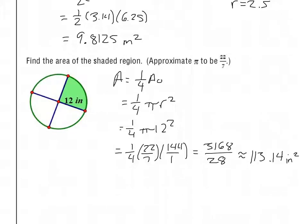Finally, the shaded area is one-fourth of a circle, so we use one-fourth of π times radius squared. The radius is labeled as 12, so one-fourth of π times 12 squared. Using π = 22/7: one-fourth times 22/7 times 144. Top times top times top gives 3,168; bottom times bottom times bottom gives 28. Dividing gives approximately 113.14 square inches.